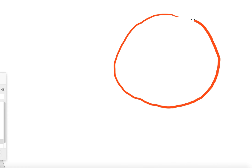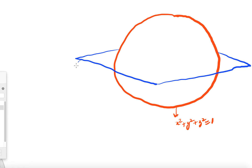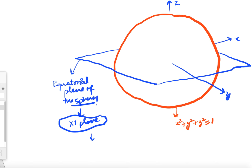Suppose we have a unit sphere: x² + y² + z² = 1. We have an equatorial plane that divides the sphere into two equal parts. This equatorial plane is the xy-plane, with x-axis, y-axis, and z-axis defined accordingly. We will think of this xy-plane as the complex plane.